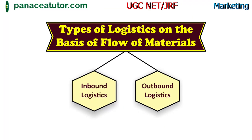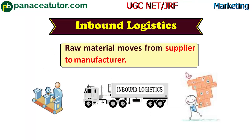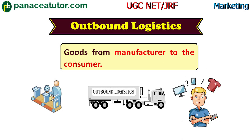Now we will discuss the types of logistics. The first classification is based on flow of materials, and logistics here are of two types: inbound logistics and outbound logistics. In inbound logistics, raw materials move from suppliers to manufacturers. Activities include material handling, warehousing, inventory control, scheduling, and return to suppliers.